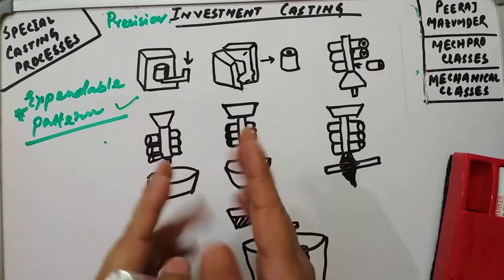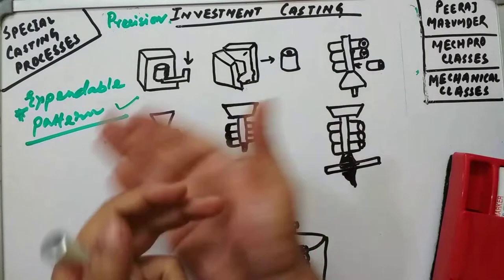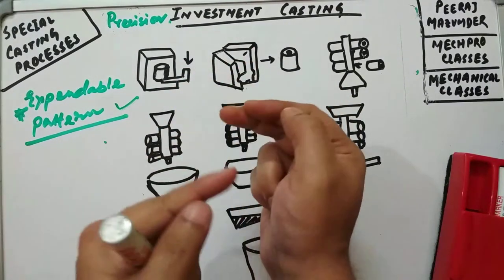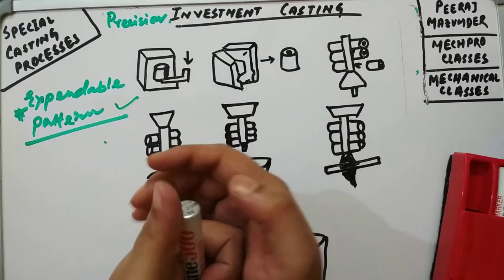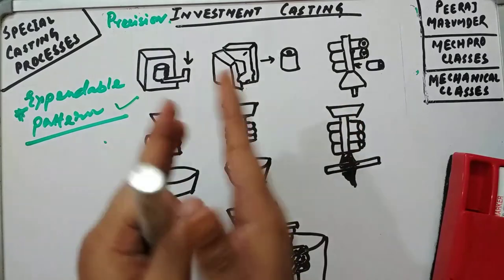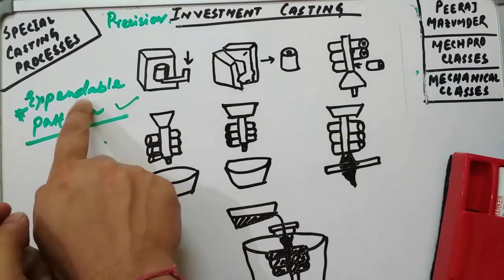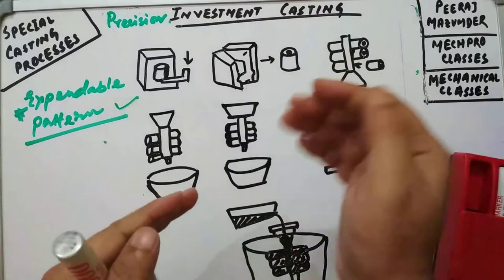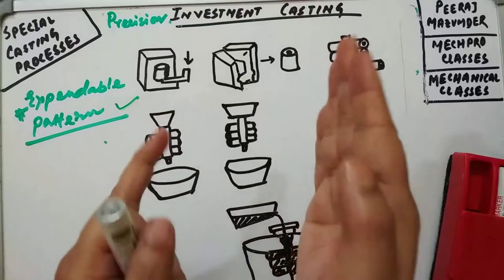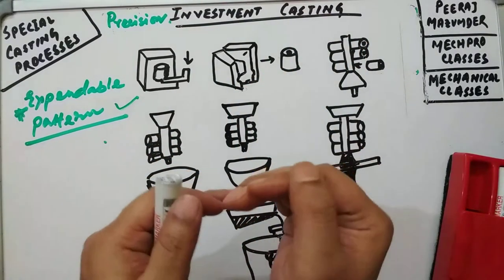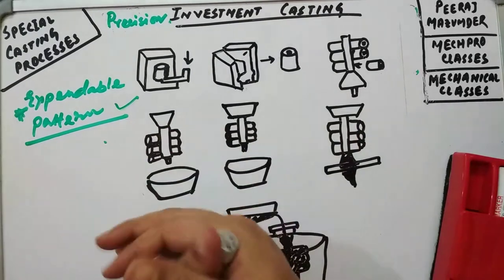The first step in this process is the preparation of the pattern. For every casting to be made, each and every pattern has to be prepared individually. That is why it is called an expandable pattern — it is once used and then expended. For every casting you need a unique pattern.